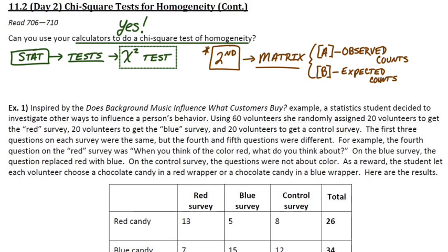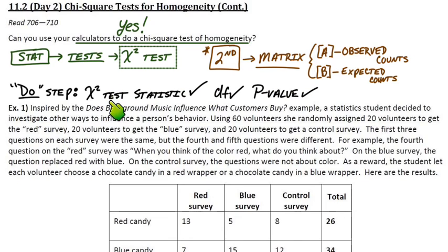And we'll do that with the example here in just a moment. So when it gets down to the do step, what do we actually need? This is state, plan, do, conclude. And the do step is usually where we implement the technology. Similar to what we've done in the past, I need to see the test statistic. In this case, it's not a T-score or a Z-score. It's our chi-squared test statistic. I need the degrees of freedom and the p-value.